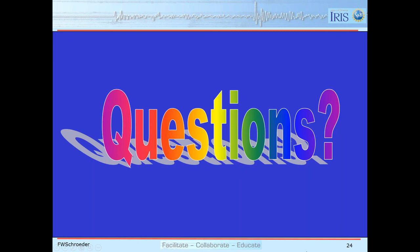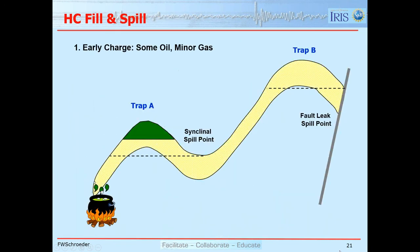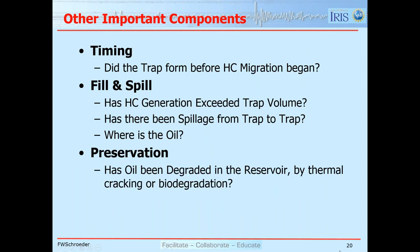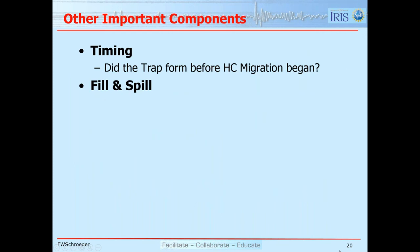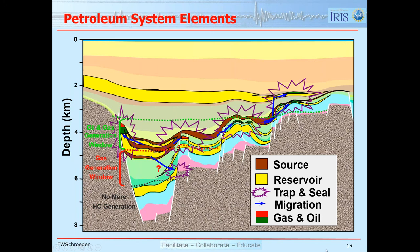If you haven't sent in a question but you do have one, you have time to submit a question now. Somebody has a question about slide number 19 — specifically about how gas would migrate down to the sand reservoir in the far left in the gas window. I know exactly what is causing that because this does seem counterintuitive, and there is a situation under which this could happen.